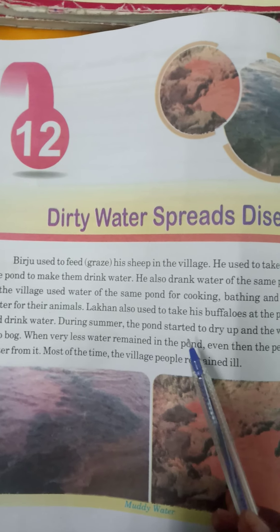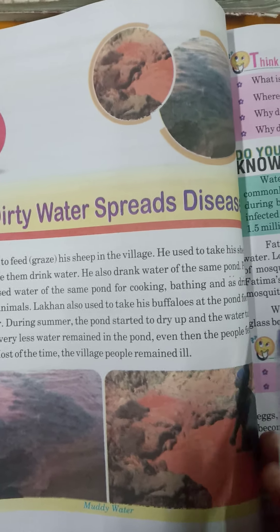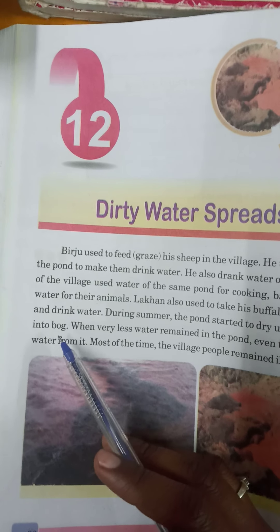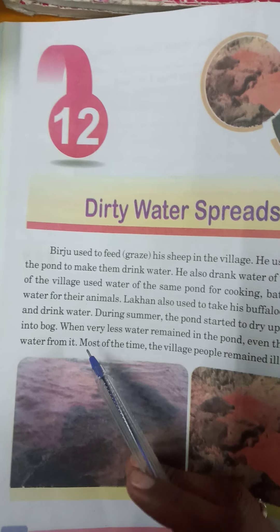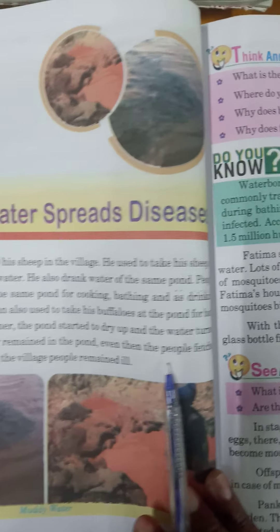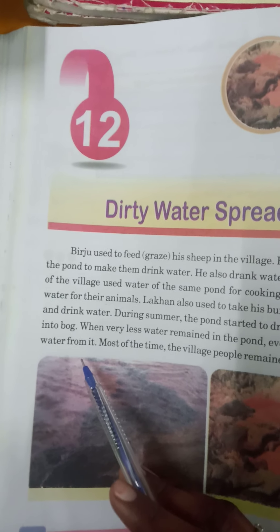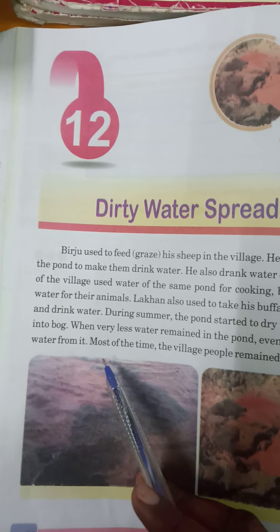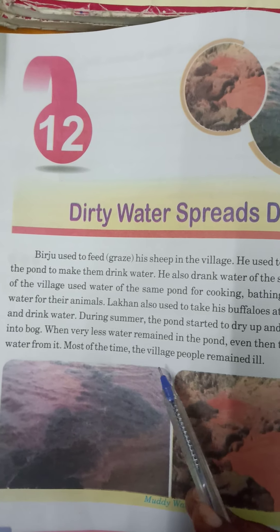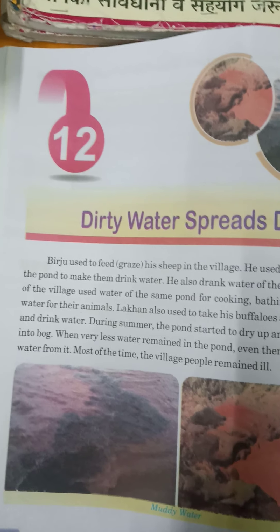During summer, the pond started to dry up and the water turned into a bog. When very little water remained in the pond, even then the people fetched water from it. Most of the time, the village people remained ill.